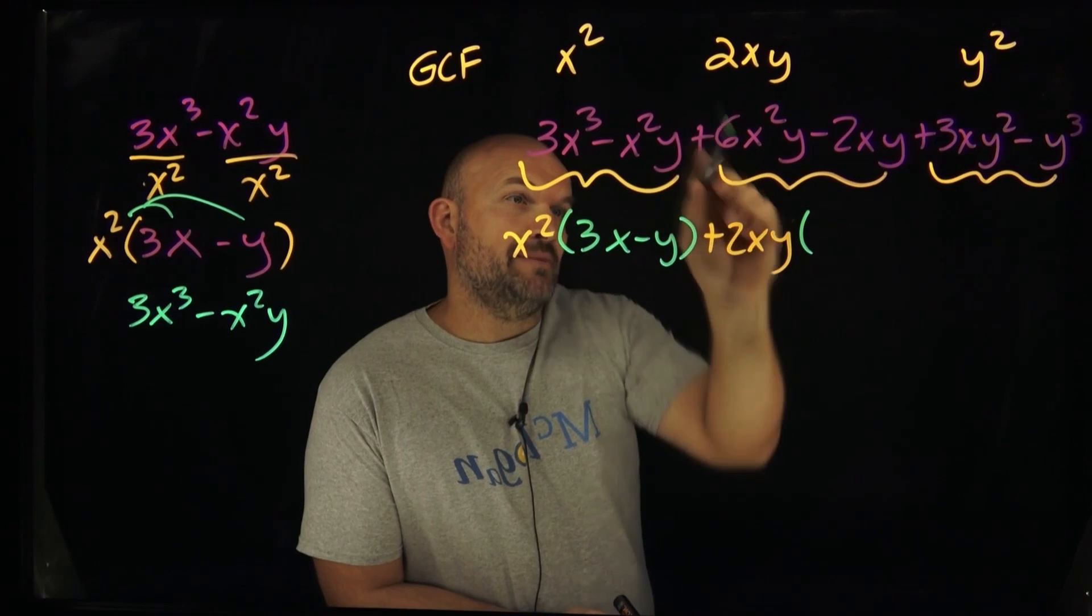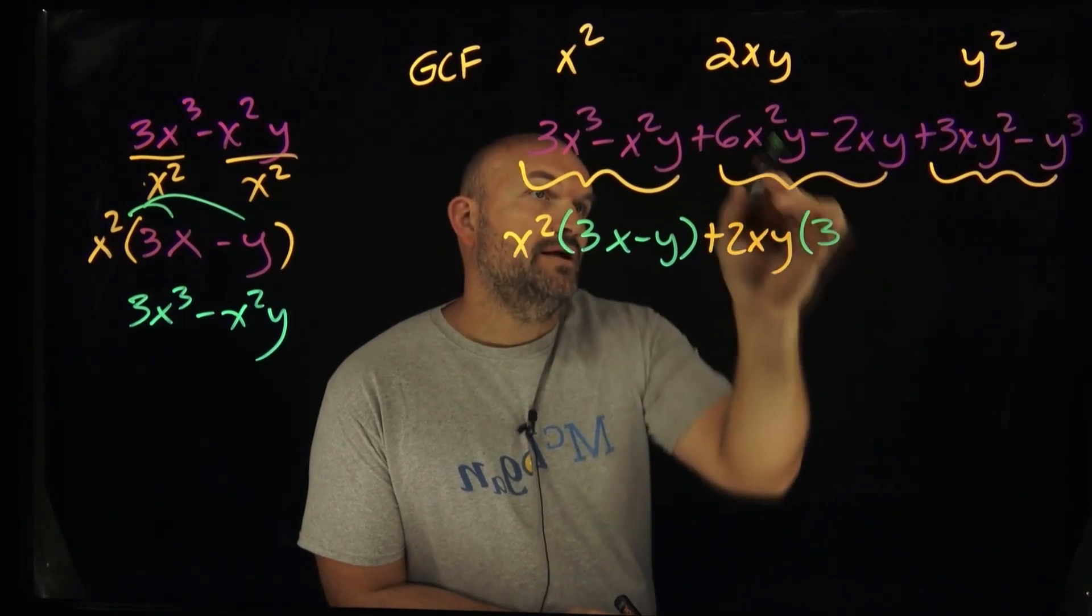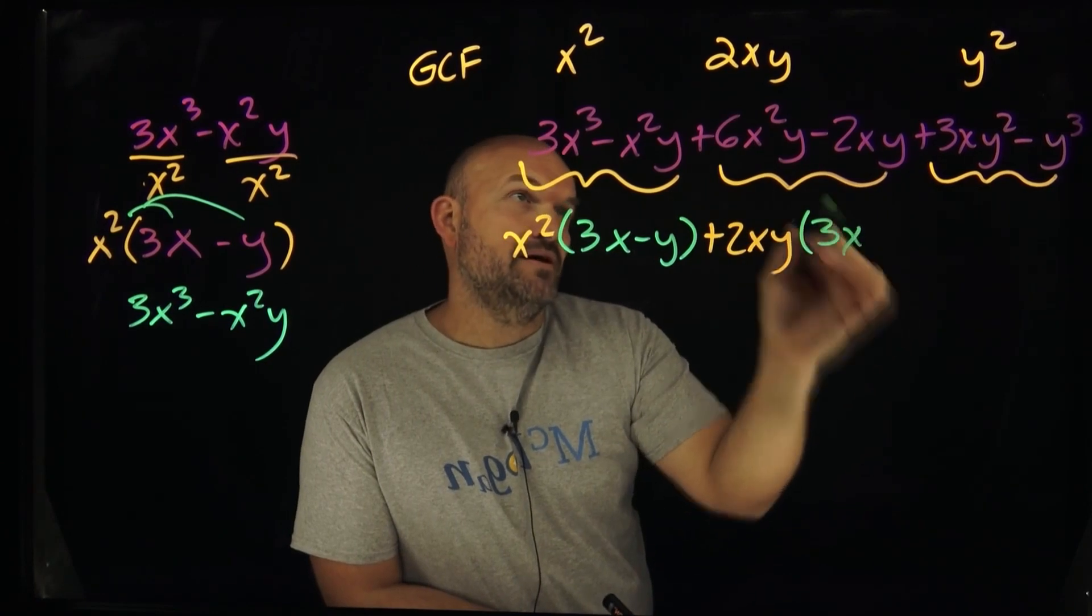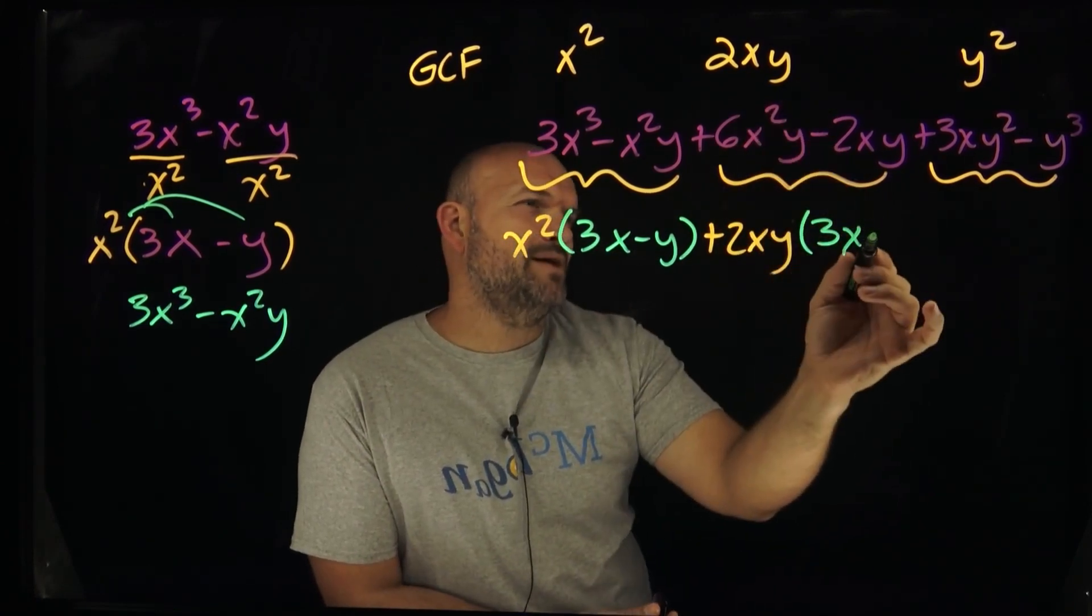Okay, so now I can take this 2 divided by 6. That's going to leave me with a 3. And then here, the x and the x is going to divide in x squared, x times. Then a y squared to y squared is going to give us minus 1.